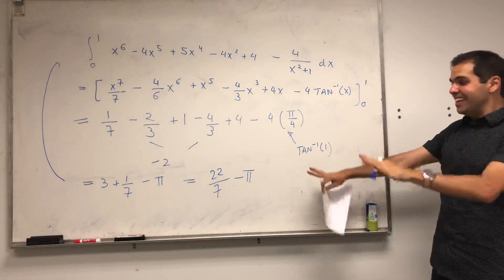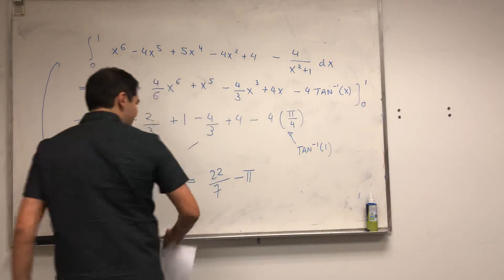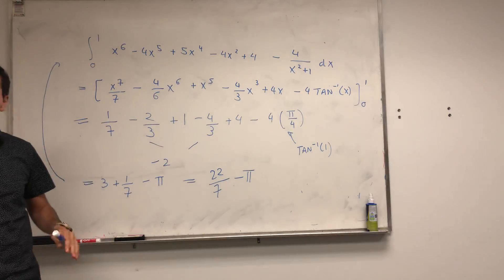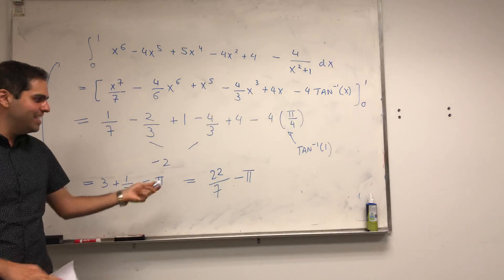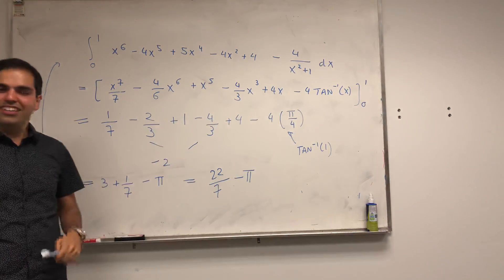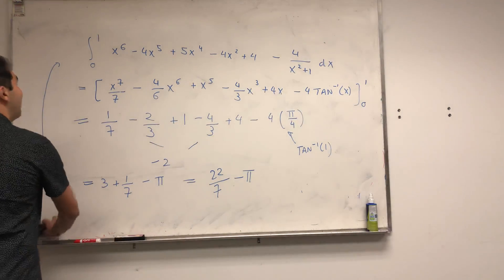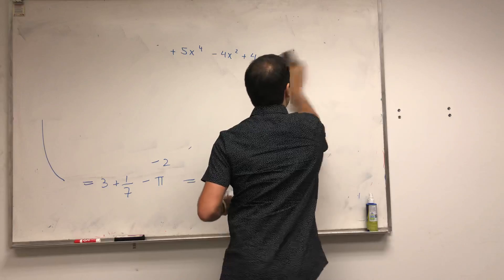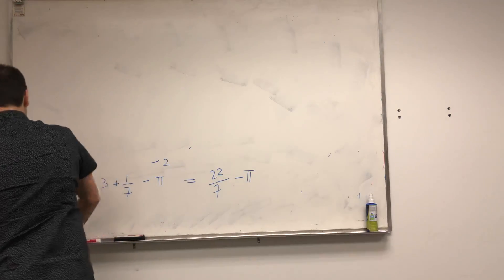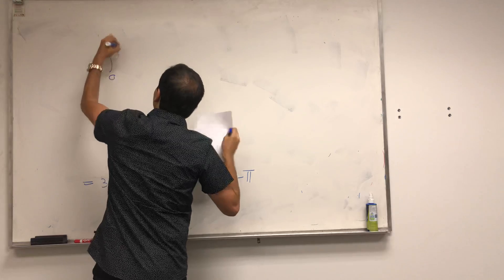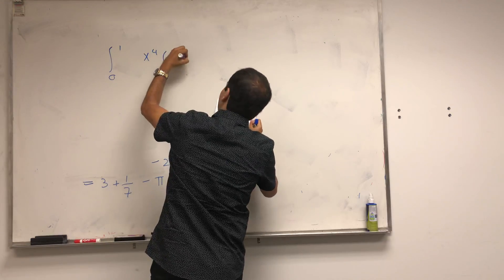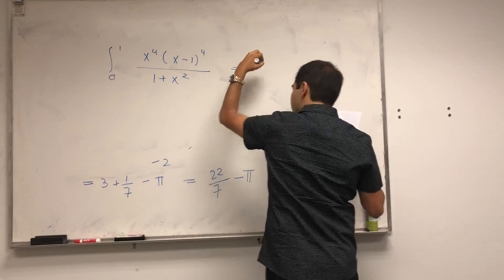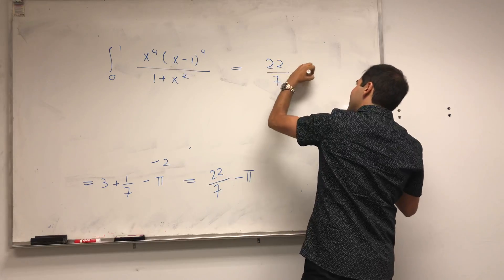How cool is that? This integral relates to two numbers: pi, and what I like to call European pi, because Europeans don't have pi day — there's no 3/14 — but they have European pi day, which is 22/7. The question is, which one is better? And the integral of x to the 4th times x minus 1 to the 4th over 1 plus x squared equals 22/7 minus pi.